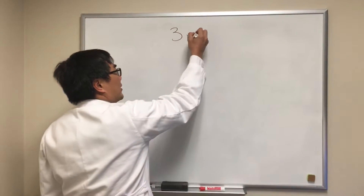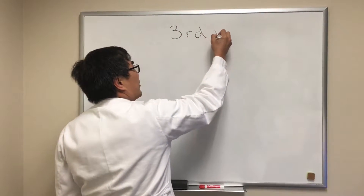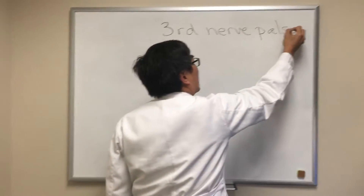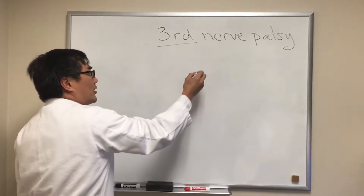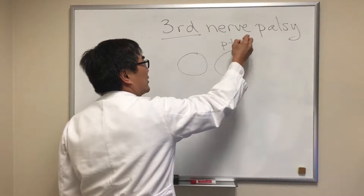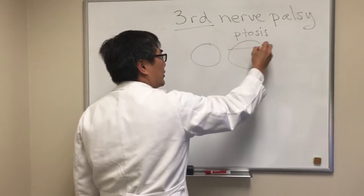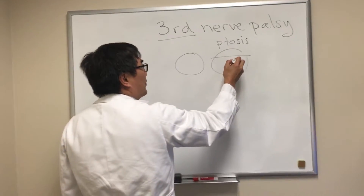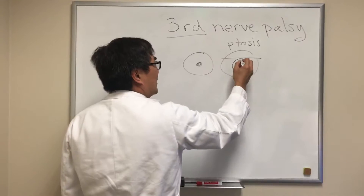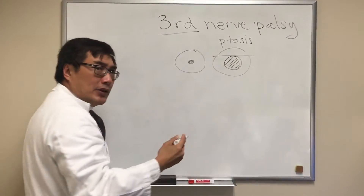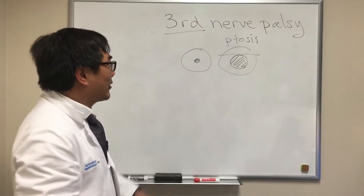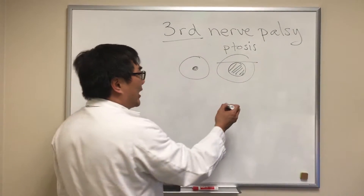Today we're going to be talking about the third nerve and third nerve palsy. The third nerve is in charge of the lid, so we might get a ptosis — either complete or partial. It's also in charge of the pupil, which might be dilated or normal, and might be partially reactive, poorly reactive, or normally reactive depending on how much pupil involvement we have.